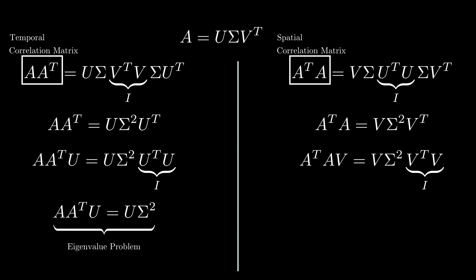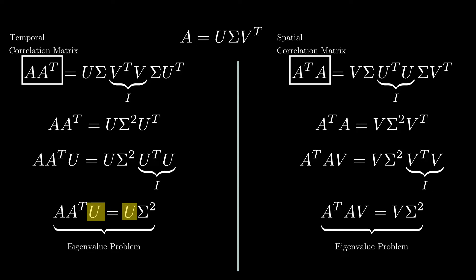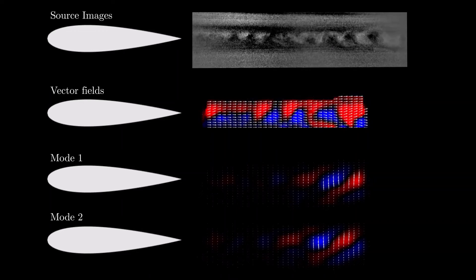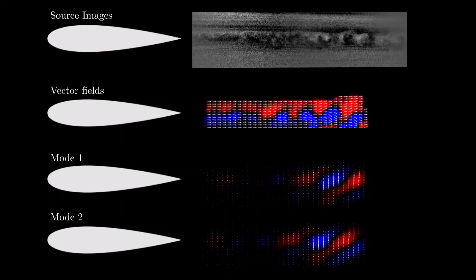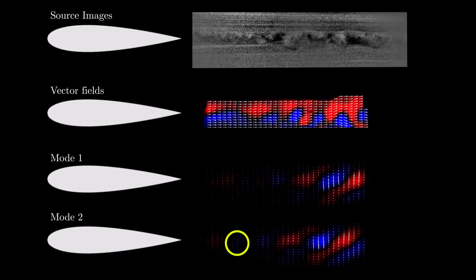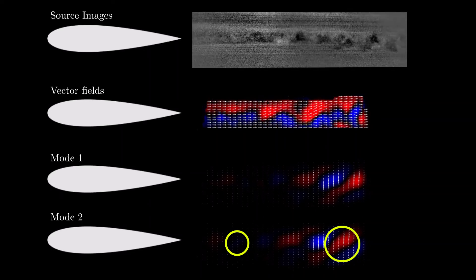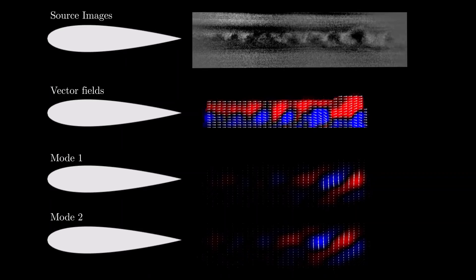Since the modes that we see in the U matrix are the eigenvectors of the temporal correlation matrix, the most energetic modes that we see are actually representing spatial patterns where the data is most temporally correlated. It might be useful to find relationships between phenomena in your dataset. For example, a small disturbance in this region is causing a large disturbance in that region in this airfoil trailing edge.